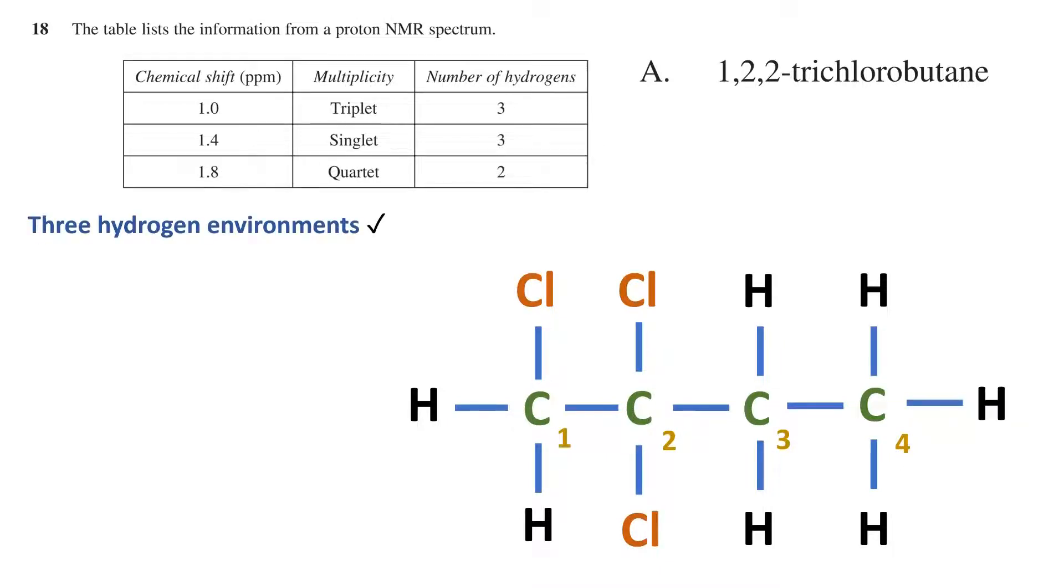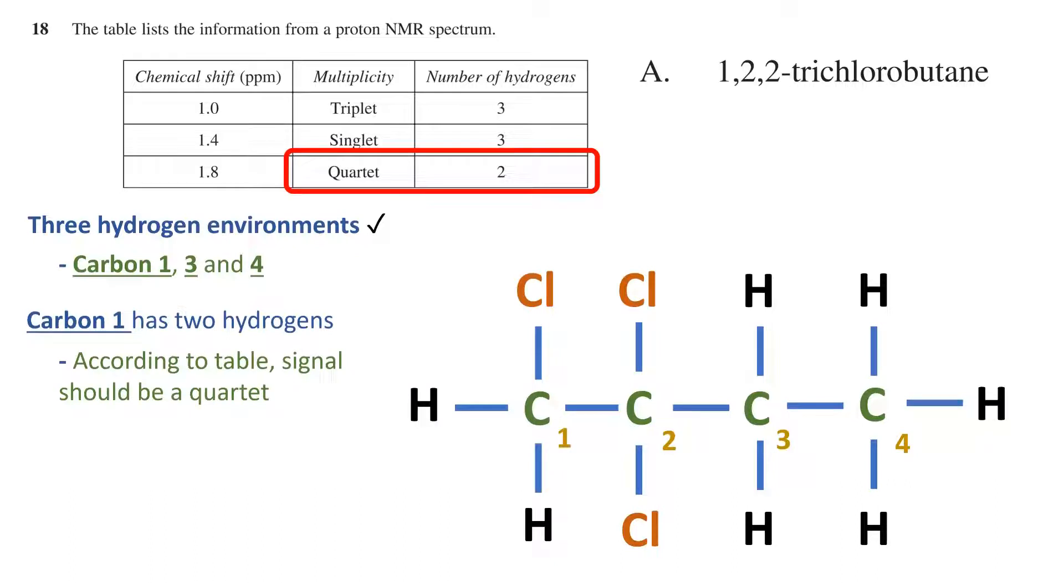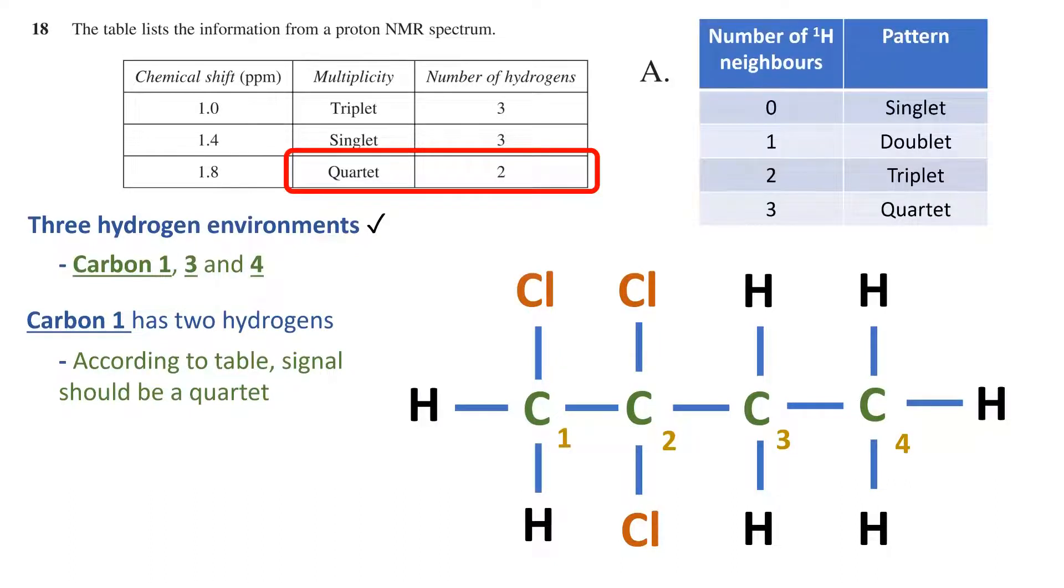As in the table provided, this molecule has three hydrogen environments. Specifically, we have hydrogens off carbons 1, 3, and 4. We can see that carbon 1 has two hydrogens off of it. According to the table, the signal with two hydrogens should be a quartet.